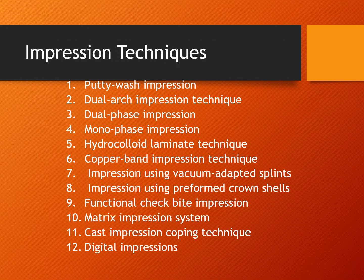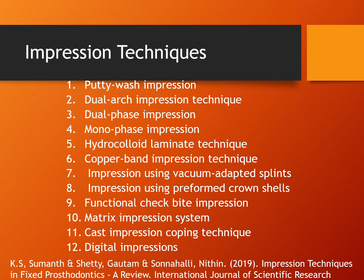There are around 12 impression techniques in fixed prosthodontics: the putty wash impression, dual arch impression technique, dual phase impression, mono phase impression, hydrocolloid laminate technique, copper band impression technique, impression using vacuum-adapted splints, impression using preformed crown shells, functional check bite impression, matrix impression system, cast impression coping technique, and digital impressions. This list is referenced from a review article by Sumanth et al. on impression techniques in fixed prosthodontics.